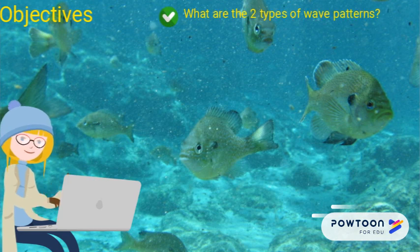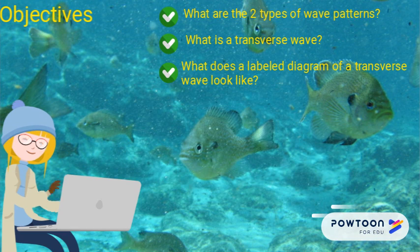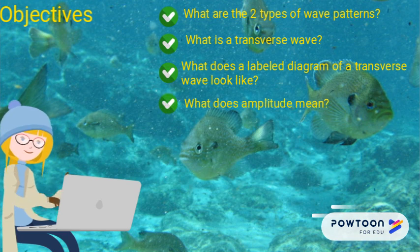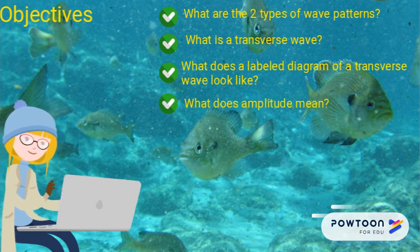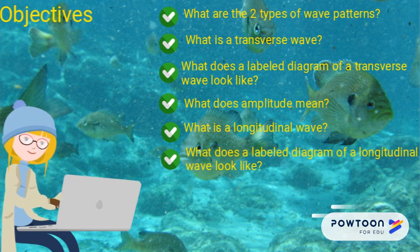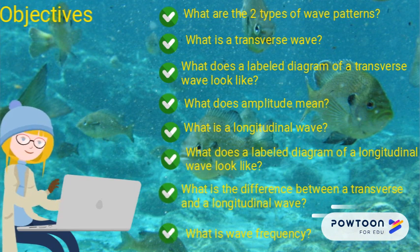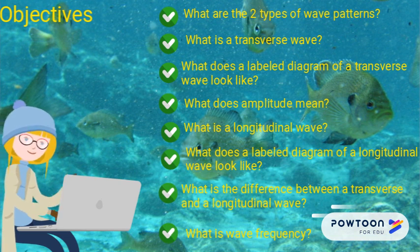Here are the objectives for your notes. What are the two types of wave patterns? What is a transverse wave? What does a labeled diagram of a transverse wave look like? What does amplitude mean? What is a longitudinal wave? What does a labeled diagram of a longitudinal wave look like? What's the difference between a transverse and a longitudinal wave? And what is wave frequency?